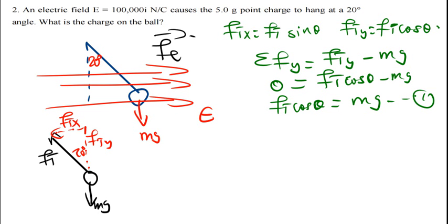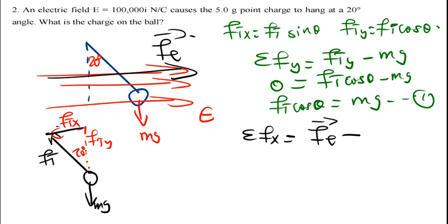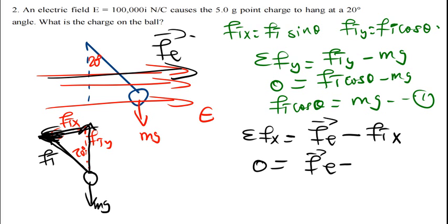Now let's work with forces in the x-direction. The summation of forces in the x-direction: the electric force acting in one direction minus Ftx acting in the negative x-direction equals zero, since the ball is not moving. The tension component Ftx is Ft sine theta, so we get Ft sine theta equals the electric force. Let's call this Equation 2.